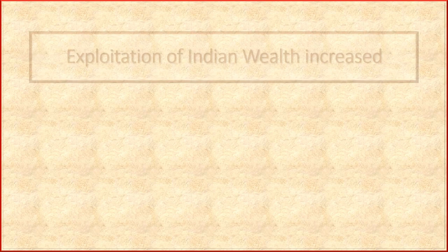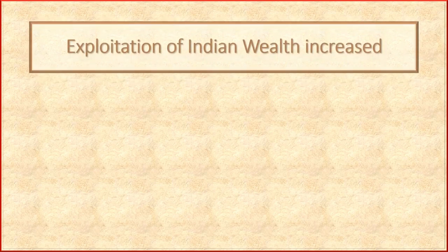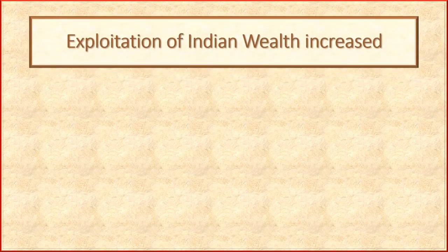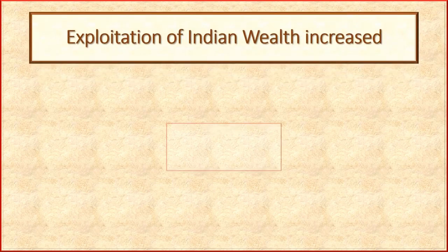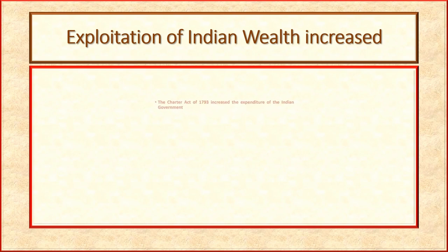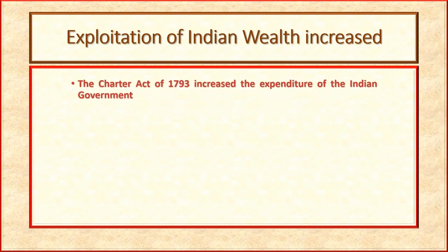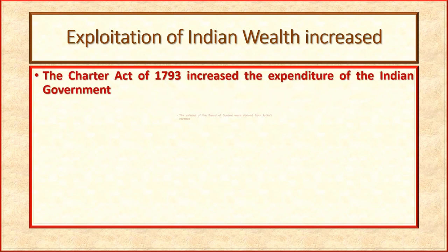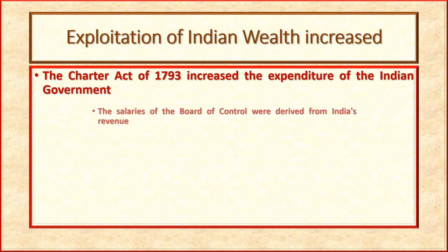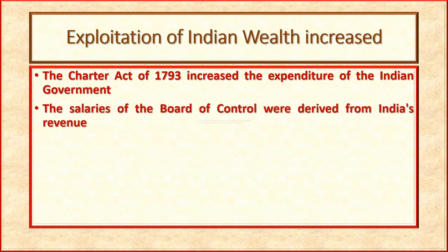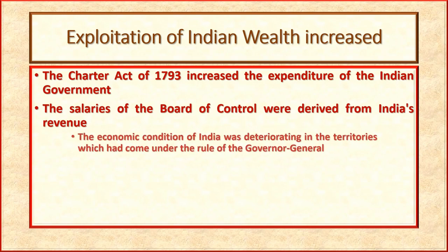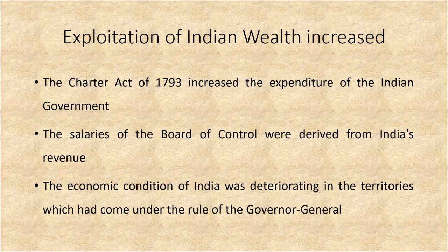Point four: The exploitation of Indian wealth increased. The Charter Act of 1793 increased the expenditure of the Indian government. The salaries of the Board of Control were derived from India's revenue. The economic condition of India was deteriorating in the territories which had come under the rule of the Governor-General.